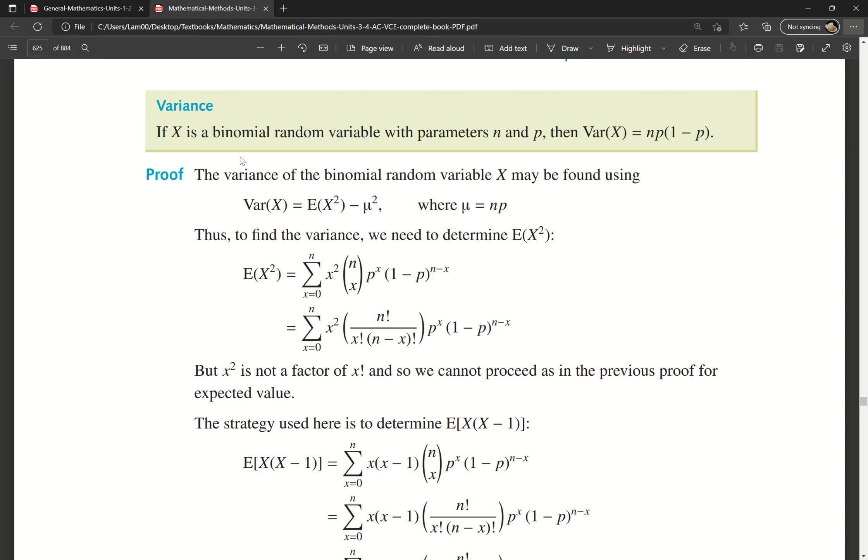Finally, we have variance. If X is a binomial random variable with parameters n and p, then Var(X) = np(1-p). We've used that before. A way to calculate variance is E(X²) - μ², where μ, as we mentioned earlier, is np, our expected value.